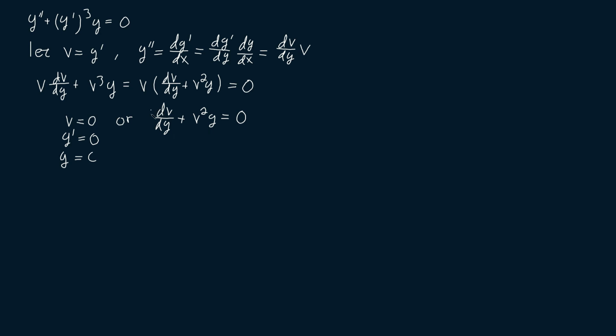Let's then take a look at the second part of the equation. Let's move v squared y to the right-hand side to get that dv dy is equal to minus v squared y.